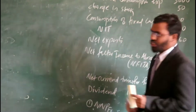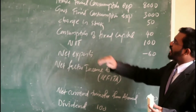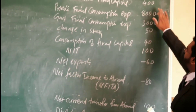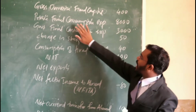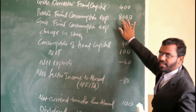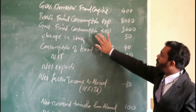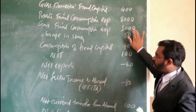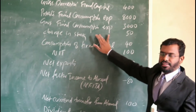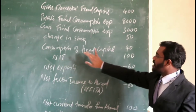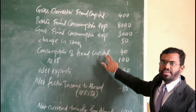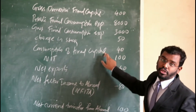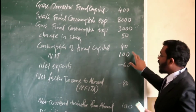Now we can discuss one more question. Gross domestic fixed capital formation, that is gross fixed investment, is 400. Private final consumption expenditure is 8000. Government final consumption expenditure is 3000. Change in stock is 50. Consumption of fixed capital — that is depreciation — is 40. NIT is 100.